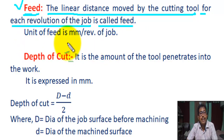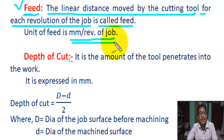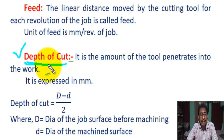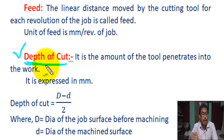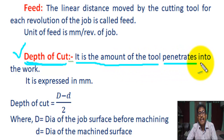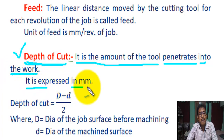What is the unit of feed? The unit of feed is millimeter per revolution. Now, what is depth of cut in lathe? The depth of cut is the perpendicular distance measured from the machined surface to the uncut surface of the job. In short, depth of cut is the amount the tool penetrates into the job, expressed in millimeters.